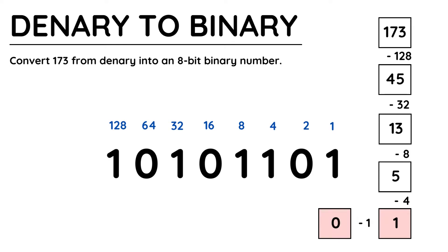Taking 1 from 1 obviously gives 0, and when you've got to 0 you know that the numbers from then on will all be 0s — but we're at the least significant bit, the LSB, anyway, and we're at the end of our number. Be really clear when you're writing out your final answer. Here I have shown that 173 is equal to 10101101.